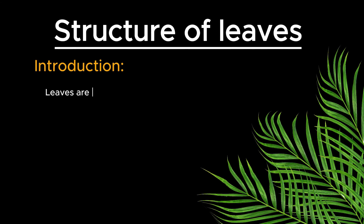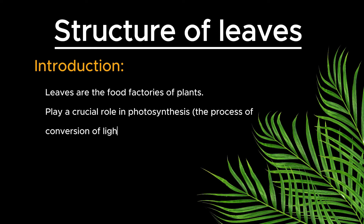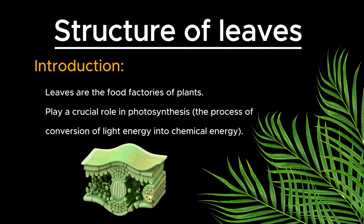Leaves are indeed the food factories of plants, playing a crucial role in photosynthesis, the process by which plants convert light energy into chemical energy. To understand how leaves function in this capacity, it is important to delve into the complex internal structure, which consists of various specialized cells and tissues working together efficiently.